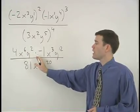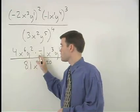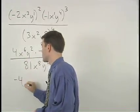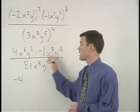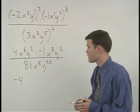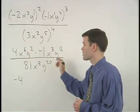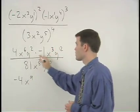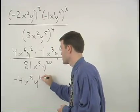Next, we apply our product rule across the numerator. Multiplying the two coefficients, we get negative 4. Remember that the product rule states that when multiplying powers that have the same base, we add their exponents. So we have x to the 6th times x to the third, which is x to the 6 plus 3, or x to the 9th. Y squared times y to the 12th is y to the 2 plus 12, or y to the 14th.